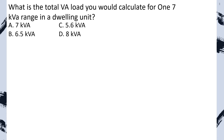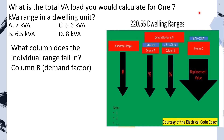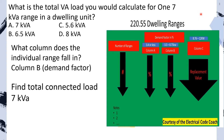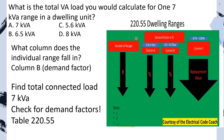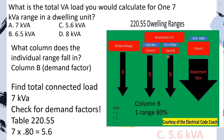What is the total VA load you would calculate for one 7 KVA range in a dwelling unit? First, find out what column we're using — our individual range falls into column B. Now find our total connected load. In this case it's just one range, so the total connected load is 7 KVA. Now check for demand factors. We head back to our table, start on the left-hand side, find our number of ranges, then cross over and find our multiplier. We find that it's 80% for one range. We take our 7 multiplied by our demand factor to get our new reduced load, and we select C.